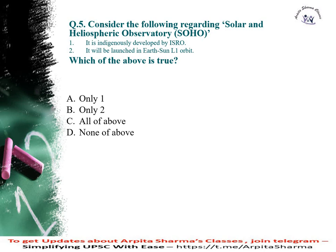Consider the following regarding the Solar and Heliospheric Observatory — SOHO, not SAHO. First, it is indigenously developed by ISRO. Second, it will be launched in the Earth-Sun L1 orbit. Which of the above is true?